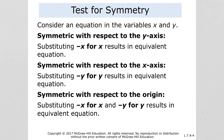If a graph is symmetric with respect to the y-axis, then we substitute negative x for x. And if it results in an equivalent equation — meaning the original equation for the function — then it's symmetric with respect to the y-axis. When you have points symmetric with respect to the y-axis, the point (x, y) would correspond to (-x, y). It just changes your x from negative to positive or to the opposite.